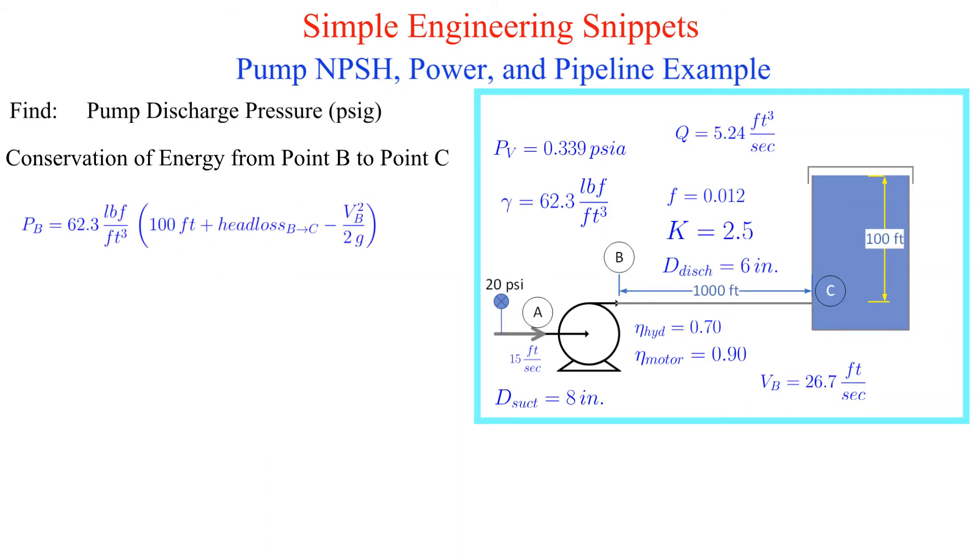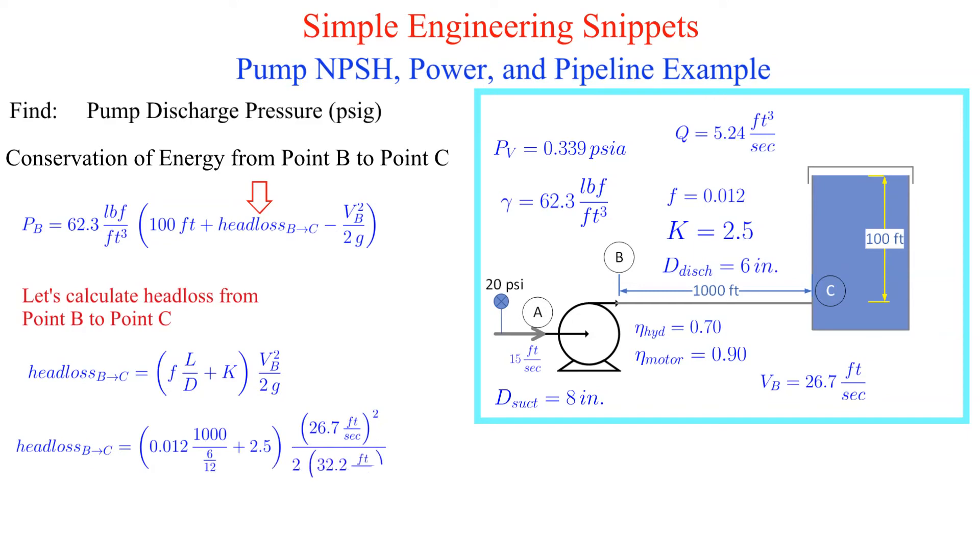Solving for the pressure at point Bravo we see that we only lack the head loss in the 1000 foot pipe. We have everything we need to calculate the head loss. It is 35.1 feet.